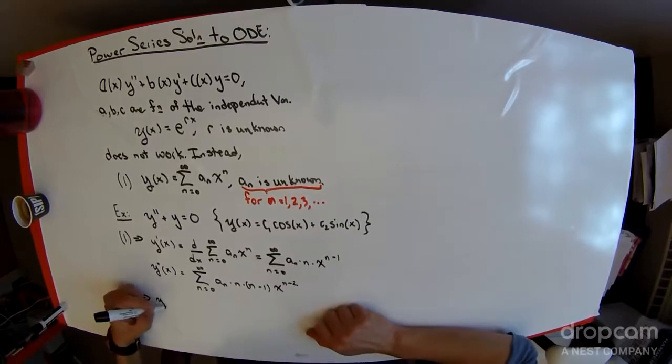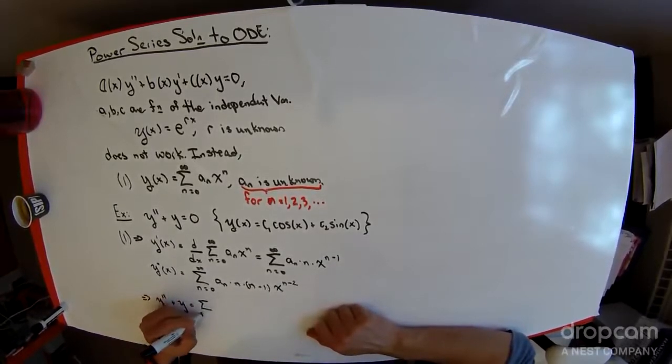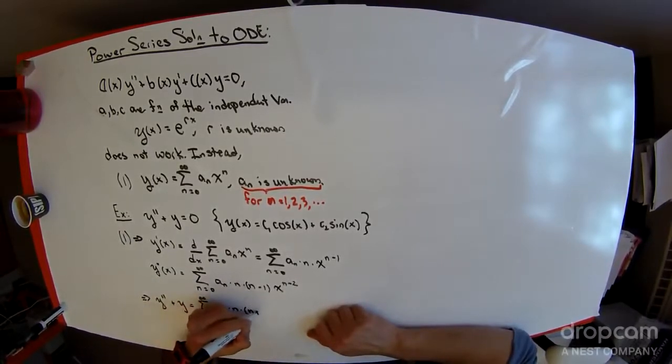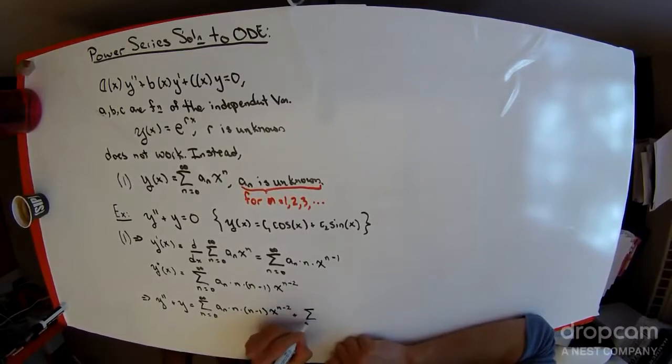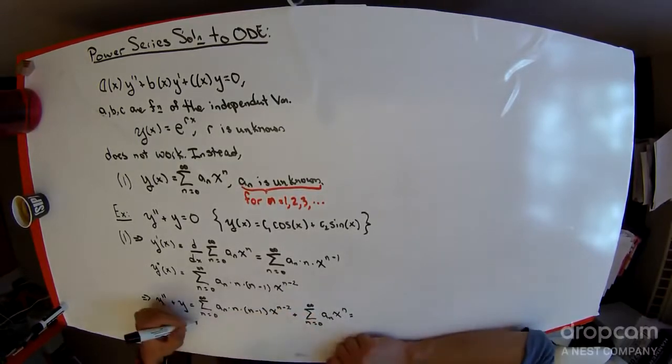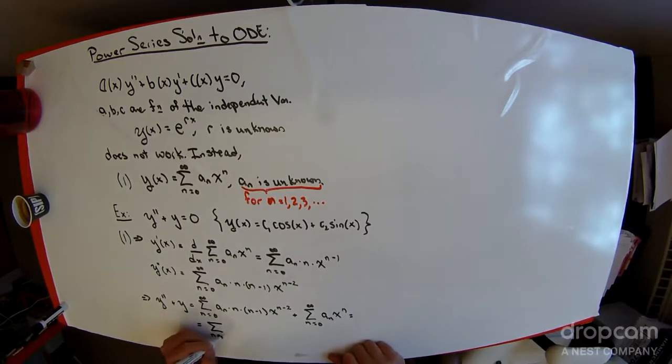What this tells me, then, is that y double prime plus y looks like the sum n equal 0 to infinity of a sub n times n times n minus 1 times x to the n minus 2 plus the sum n equals 0 to infinity of a sub n times x to the n. Now here, if n is equal to 0, then this term right here is 0, and so the first term in the summation is 0. If n is equal to 1, the second term in the series is also 0. So we'll start at n equal 2.